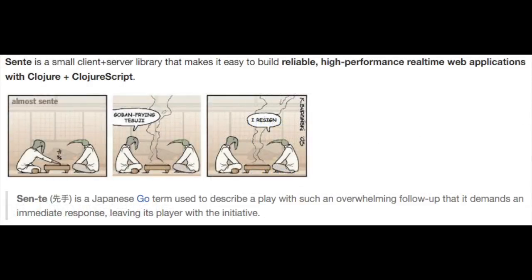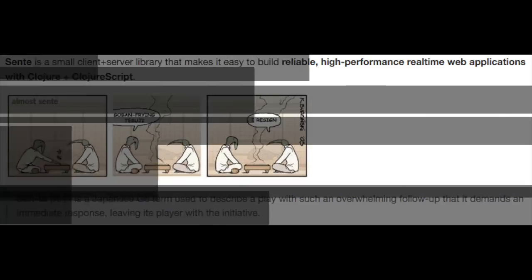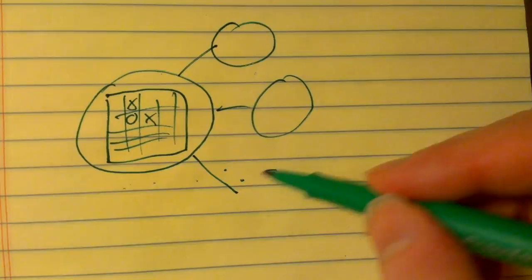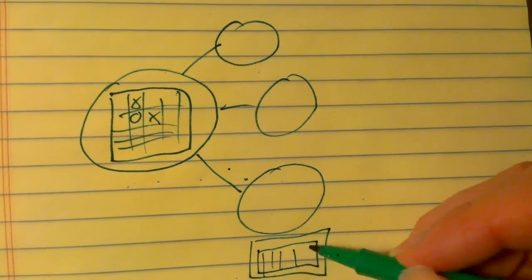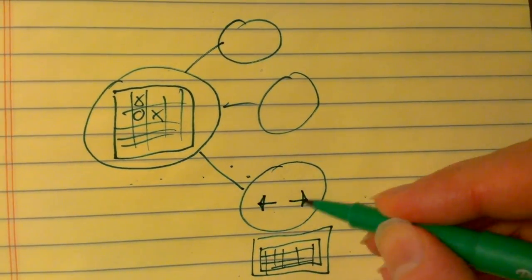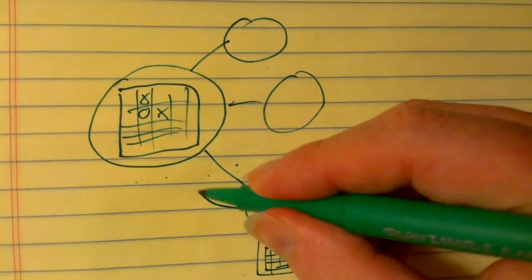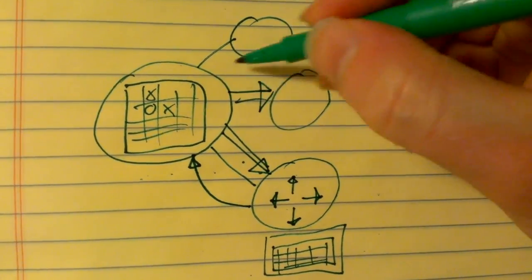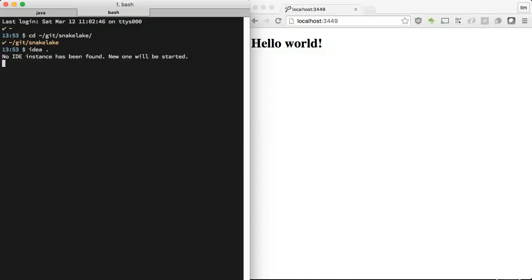Cente is a small client-server library that makes it easy to build reliable, high-performance, real-time web applications with Clojure and ClojureScript. We will use Cente to collect player direction changes and push out the new state of the world every time it updates.